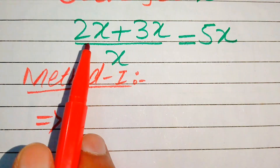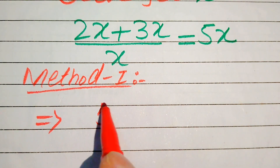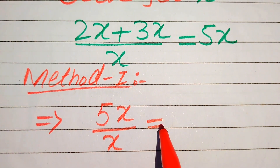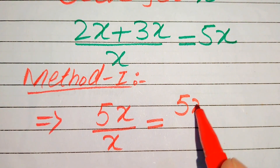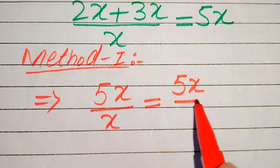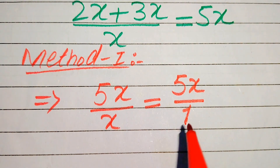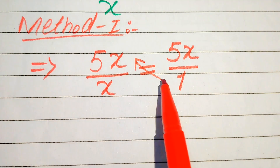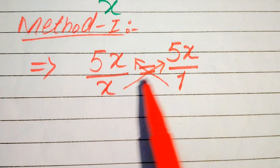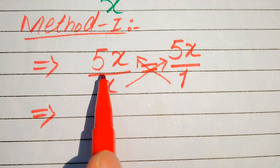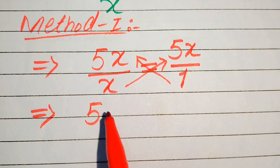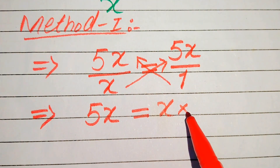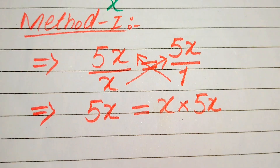So we add the coefficients of these terms: 2 plus 3 becomes 5 times x, and it is divided by x, equals to 5x on the right-hand side. The denominator of this term is 1, and now we need to cross multiply the terms. We multiply 1 with this value and x with this value, so 1 times 5x equals 5x, and x times 5x equals x multiplied by 5x.